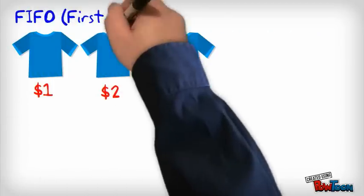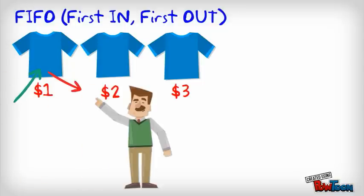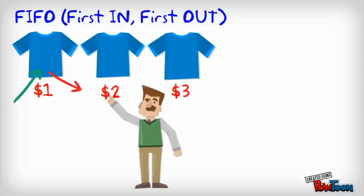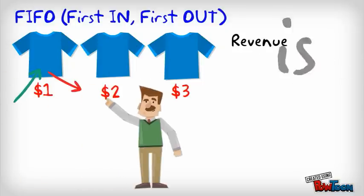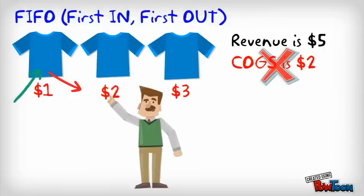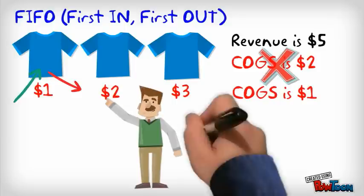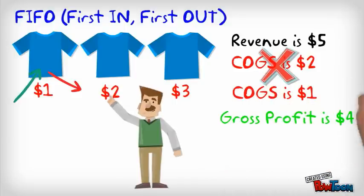Under FIFO — first in, first out — whatever we bought first is the first to be sold. Let's say this guy picked up the second shirt. He has to pay $5, which is our revenue. Our cost of goods sold is not $2 because we do not care which shirt he picked up. We assume he picked up the first one that we bought, so our cost is $1.